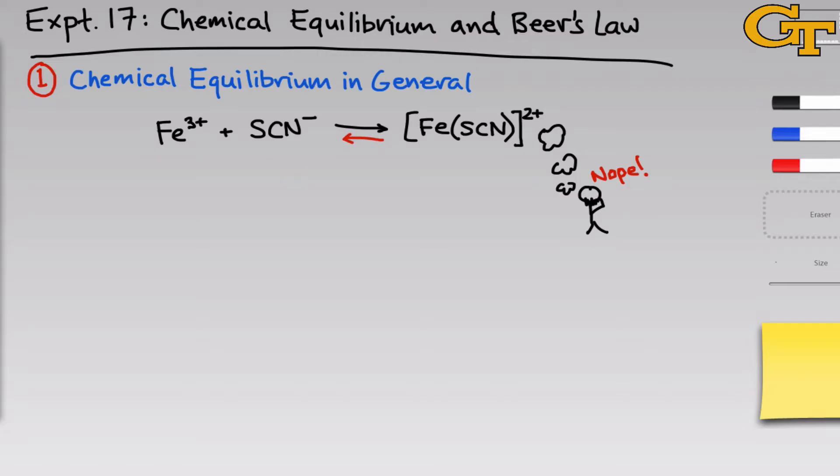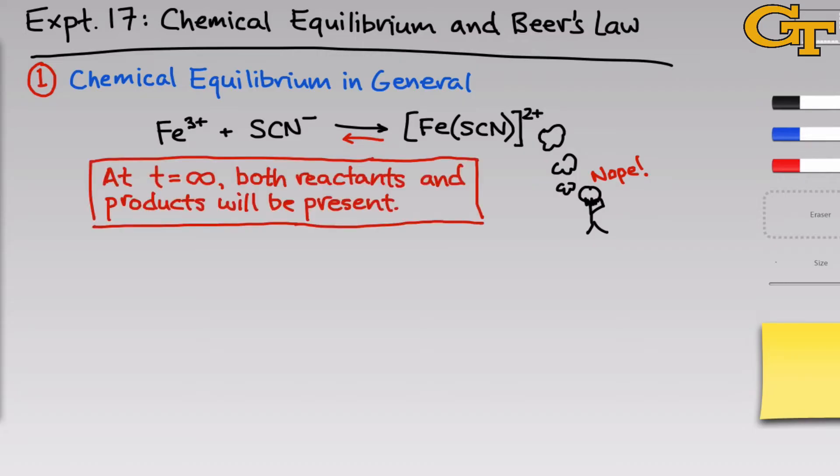The complex might break apart to form Fe3+ and SCN-. A key question we have as chemists is how do we know which direction, forward or reverse, is more likely? What we can say in general is that after an infinite amount of time, both reactants and products will be present. Their relative amounts tell us whether the forward direction is favored, in which case we'll see more products, or the reverse direction is favored, in which case we'll see more reactants. This state in which the rates of the forward and reverse reactions are equal and the amounts of reactants and products are not changing with time is called chemical equilibrium.